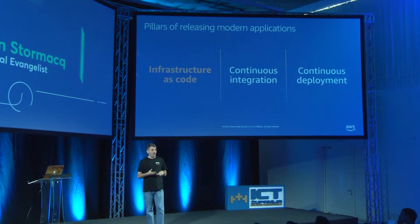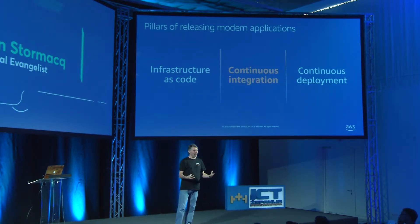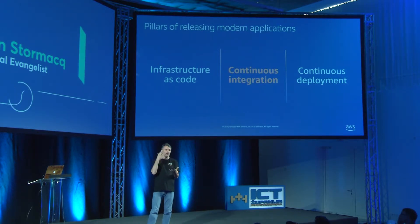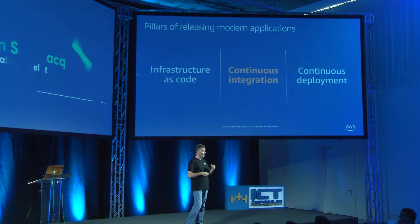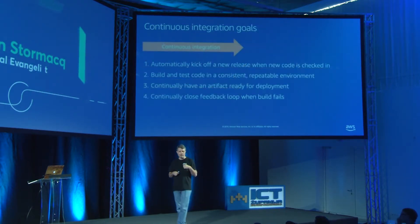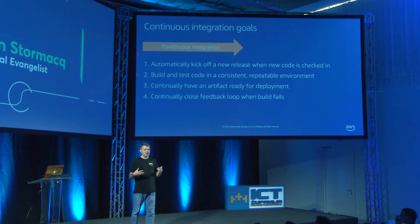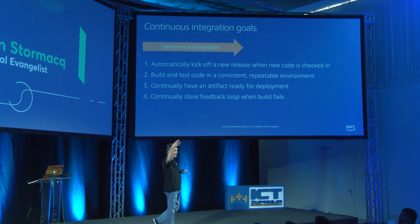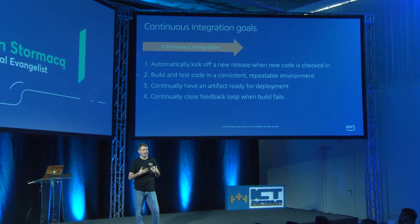Continuous integration is the idea of taking source code produced by your developers and building it in a repeatable environment — always the same environment so the resulting artifacts, zip files or jar files, are always the same. Equally important is very frequent builds, because if you have 10 developers working in a branch, there is a high probability that a change by one developer will break something else in the application. Detecting this early is much easier than catching it six months later.